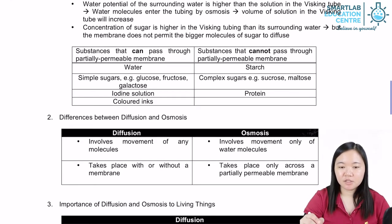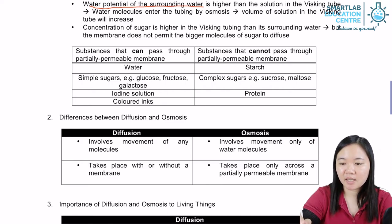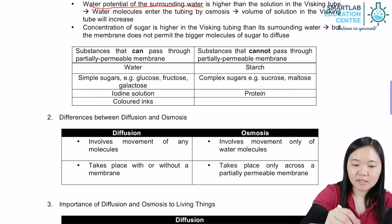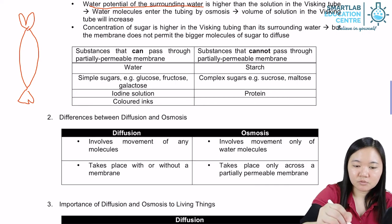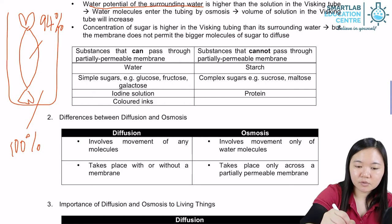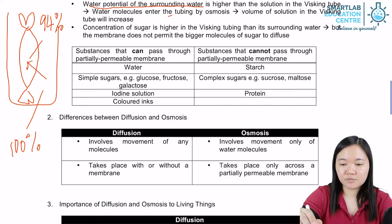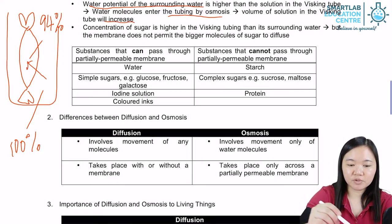The water potential of the surrounding water is higher than that of the visking tubing. The water potential inside the visking tubing is 94 percent, while the surrounding water is 100 percent. So water potential moves from a region of higher to a region of lower water potential — this is why osmosis occurs, and the volume of the visking tubing will increase.